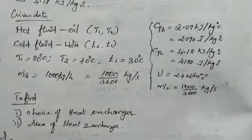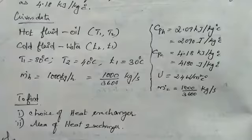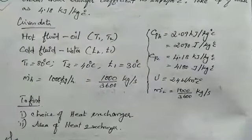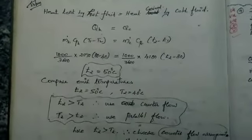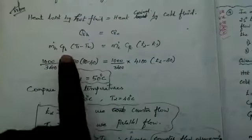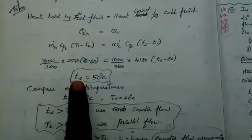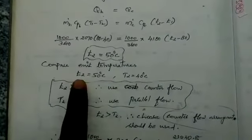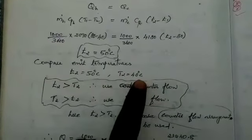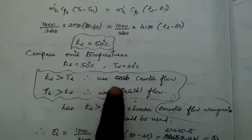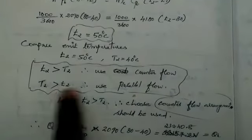Now we find the choice of the heat exchanger — parallel flow or counter flow — and calculate the area. Heat loss by hot fluid equals heat gain by cold fluid: QH = QC. Substituting, exit temperature of cold fluid t2 = 50 degree Celsius. Capital T2 = 40 degree Celsius. Since T2 is less than t2, we use counter flow.